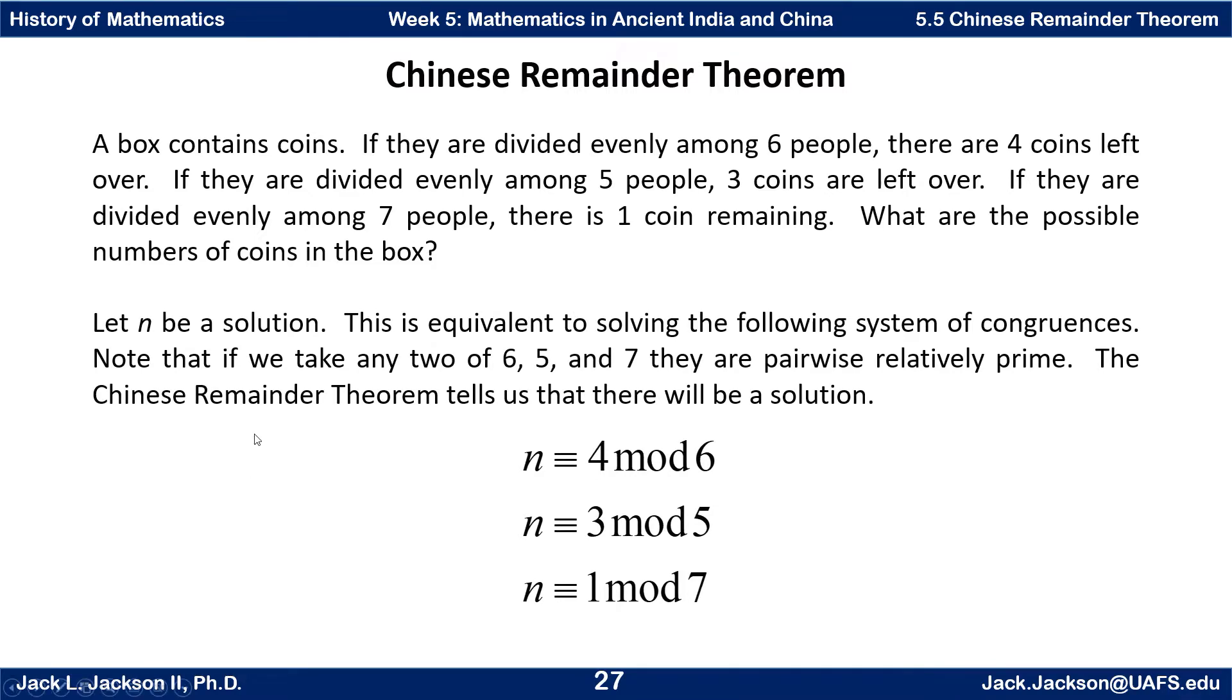Let n be a solution. This is equivalent to solving the following system of congruences: n is congruent to 4 mod 6, n is congruent to 3 mod 5, and n is congruent to 1 mod 7. If you're taking my history of math class, you should have seen modular arithmetic before. But basically what this means is that when you divide n by 6, you get a remainder of 4. This one says when you divide n by 5, you get a remainder of 3. This says when you divide n by 7, you get a remainder of 1.